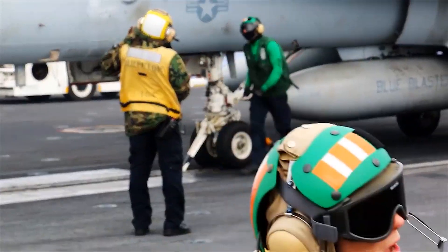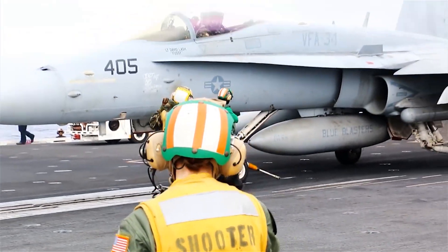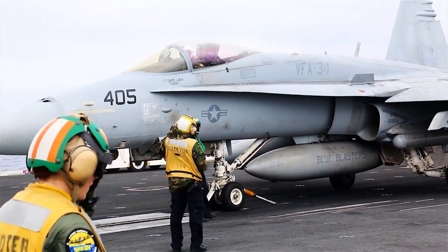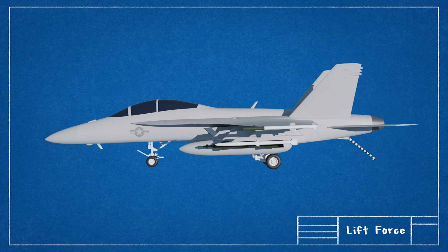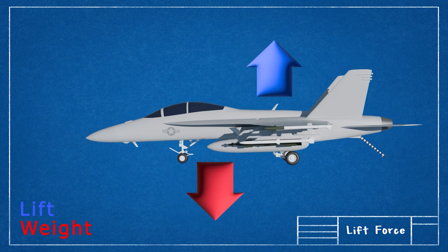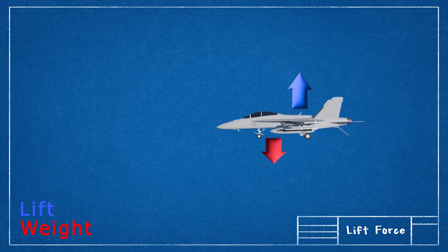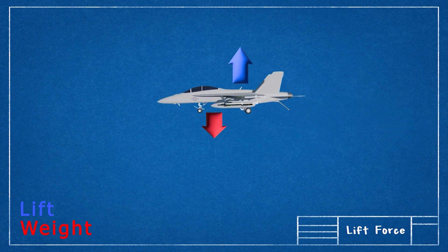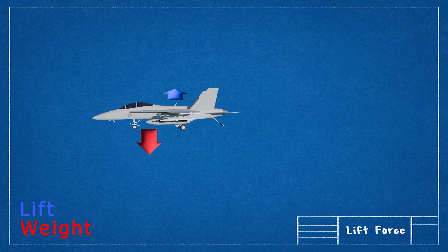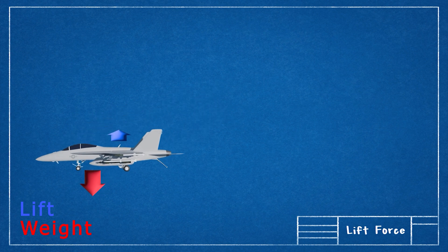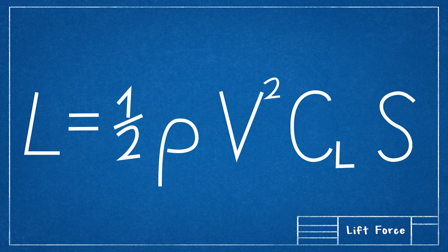To better understand their role, we first need a quick theory lesson on the principles of flight. Lift is a force generated by the wings and partially by the fuselage, which keeps the aircraft in the air. If it equals the aircraft's weight, the flight is level. If it's greater, the aircraft is in steady climb. If it's less, the aircraft is in steady descent.